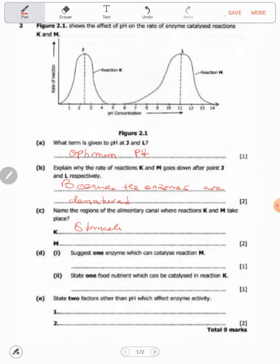Reaction M - anything above seven is alkaline, so since reaction M is alkaline, this can occur in the mouth or in the duodenum. One enzyme which can catalyze reaction M is amylase.